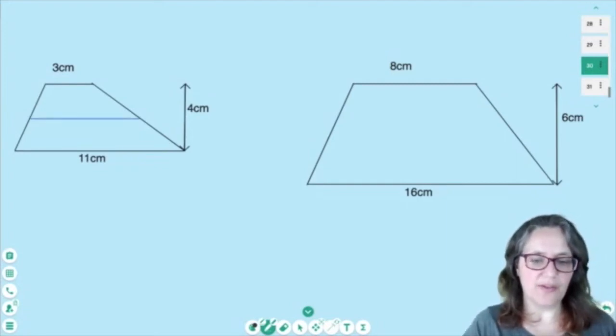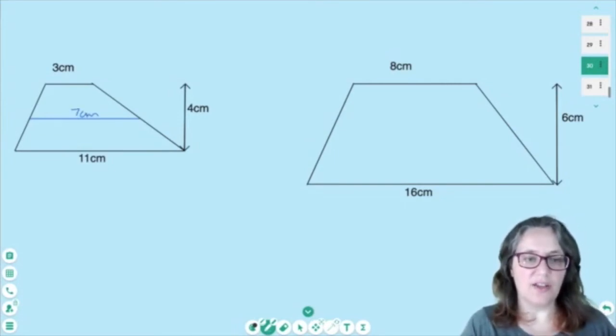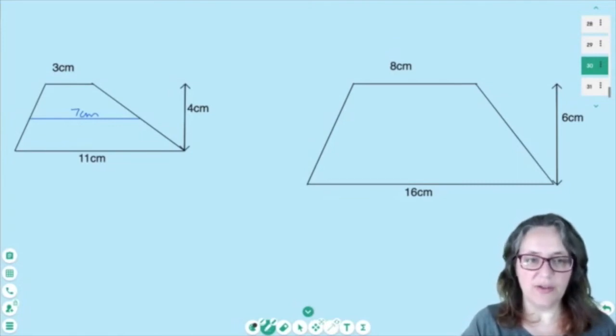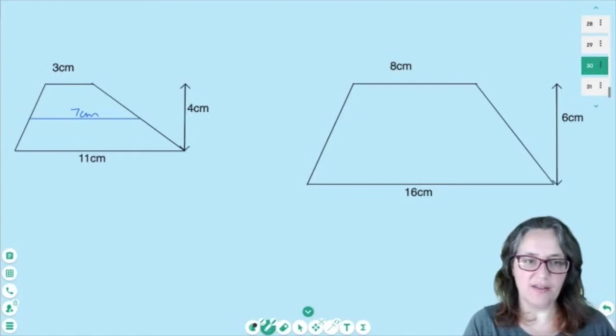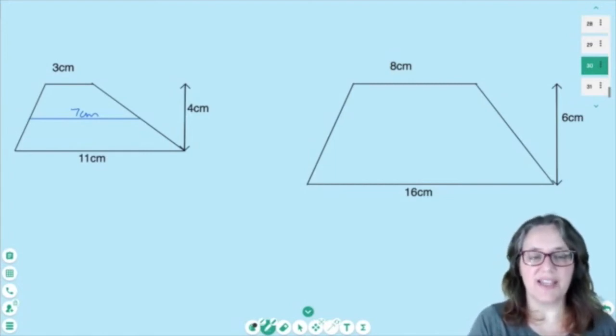Well halfway between 3 and 11 is going to be 7 cm. You can work that out again looking at a ruler and seeing what's in the middle or just 11 add 3 is 14, halve it to get 7.